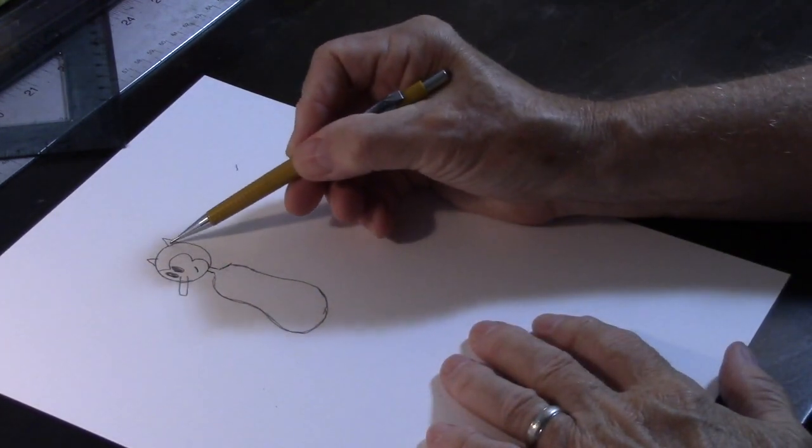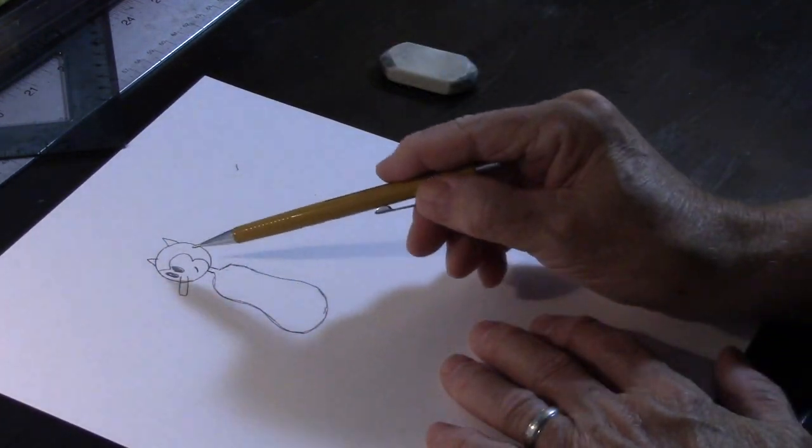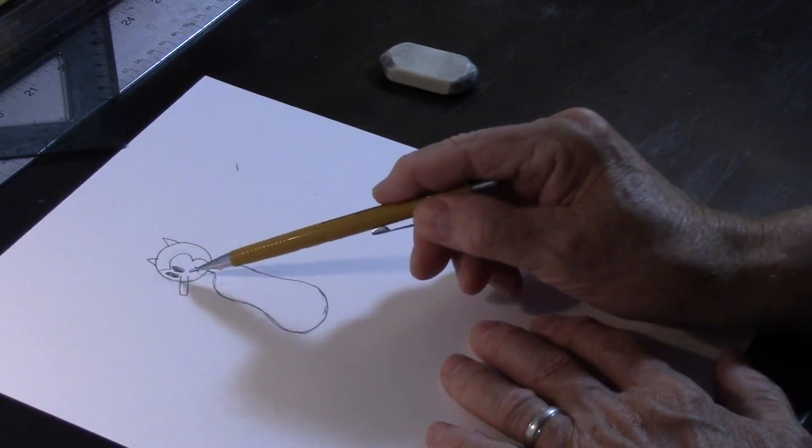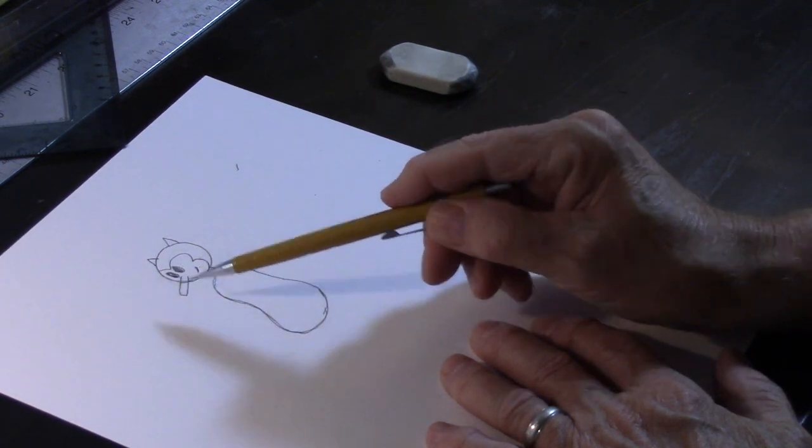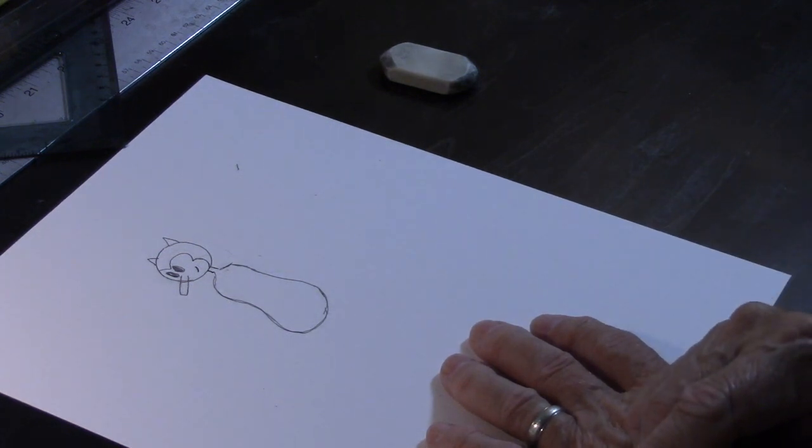Now let me show you how to turn this into something that you can recognize. Now we put a couple of ears in here, a couple of eyes, kind of a funny long nose, and a mouth. Now we have a cat.